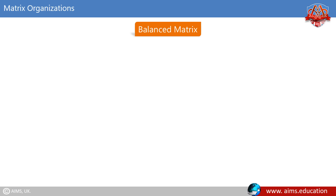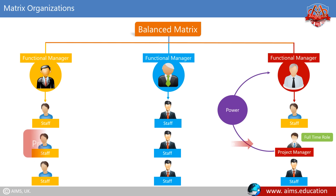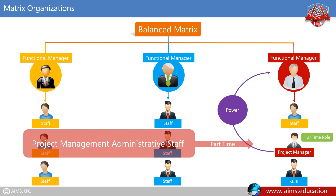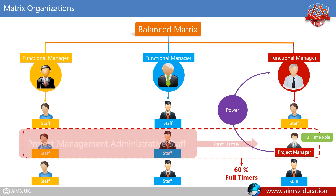In a balanced matrix, power is shared between the functional manager and the project manager. Although the project manager has a full-time role, he has only part-time project management administrative staff. Up to 60% of the project team in a balanced matrix structure are full-timers. The project manager is assigned on a full-time basis; however, support staff are usually part-time rather than being fully dedicated to the project.